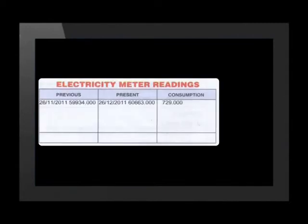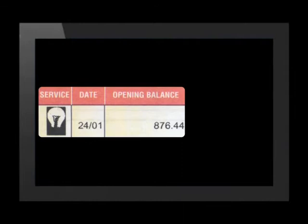Let's take a look at an account together. This municipal account belongs to Mr. Strauss. As with all financial documents, they are always dated. The cost for each service rendered is listed separately. The amount of electricity used is 729 kWh, and the cost for this electricity is R876.44.